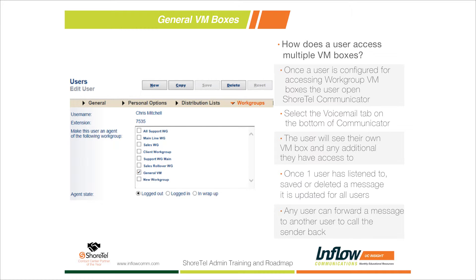If I want to forward a message from Brad — say it's really for the sales team and came into the general mailbox overnight — I select the message, listen to it, and click the Forward button. I select Travis or whoever I want to forward it to, and I can append my own greeting: 'Hey Travis, this is a message from Brad, he's looking for a quote on a piece of equipment, can you help him?' Then I forward it. If it's something I can deal with myself, I can click the Contact Sender button and call the user back directly.